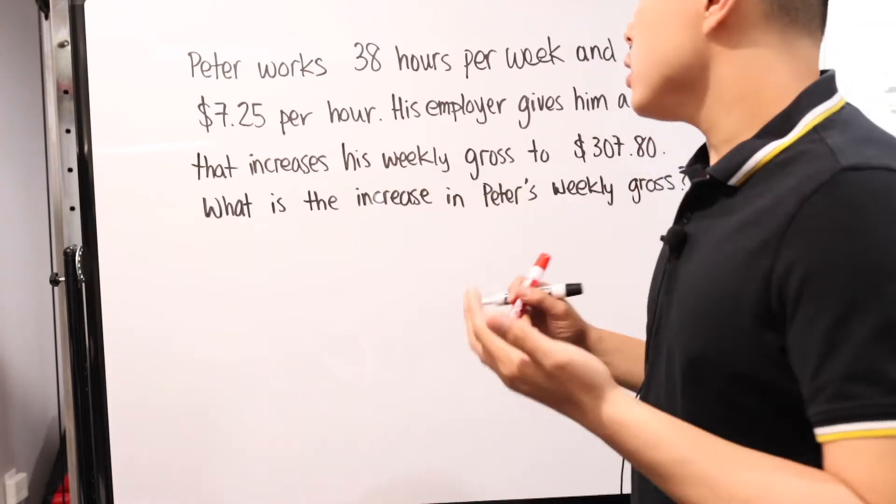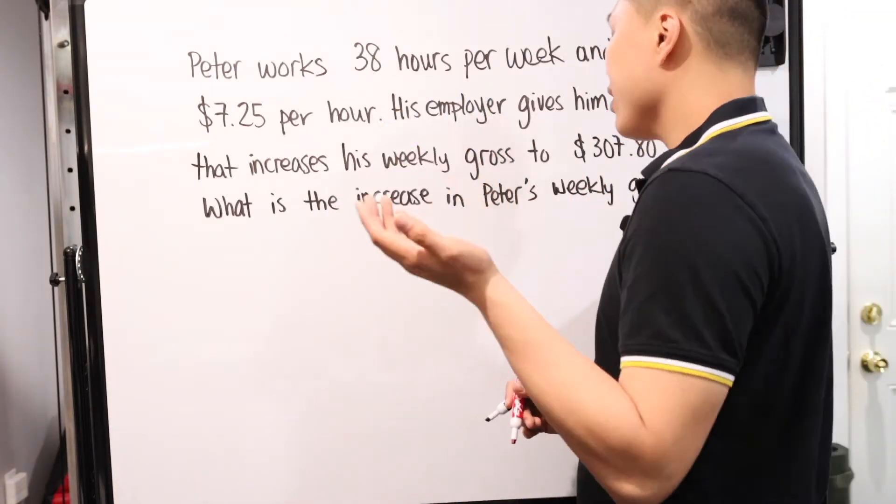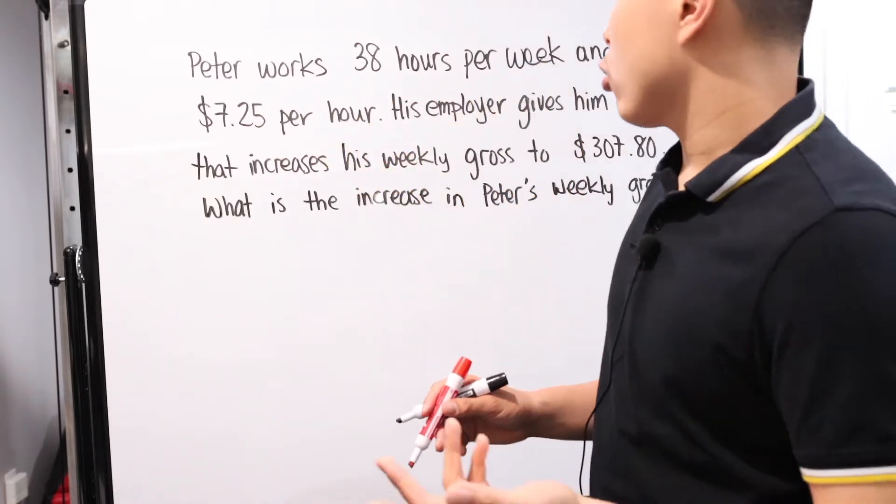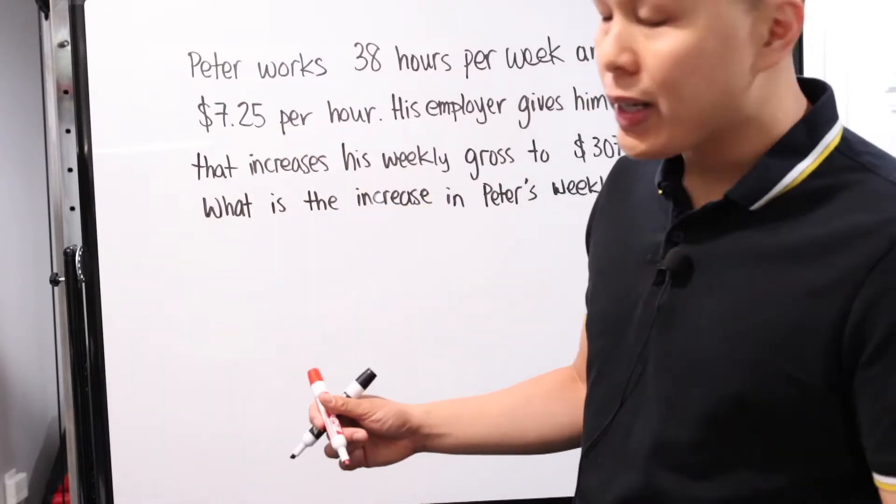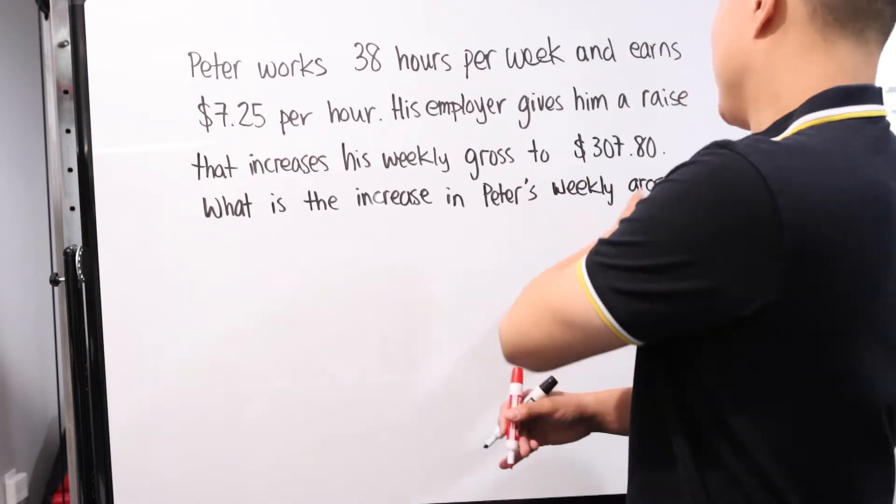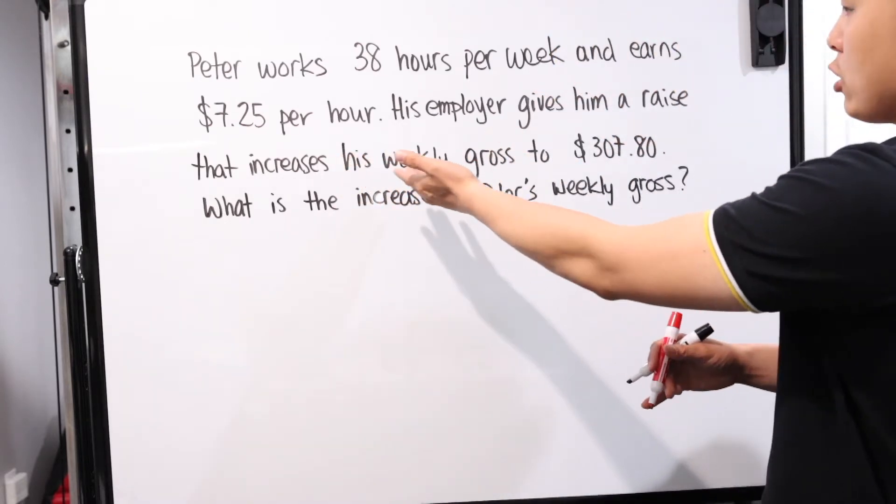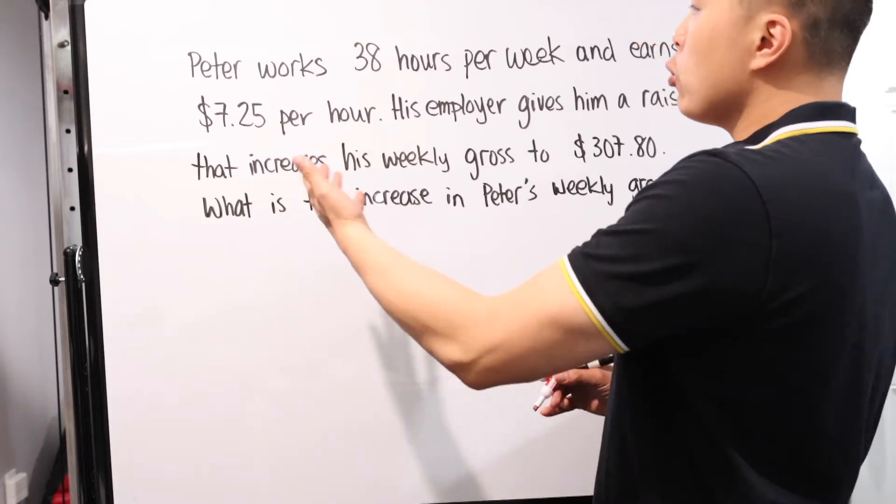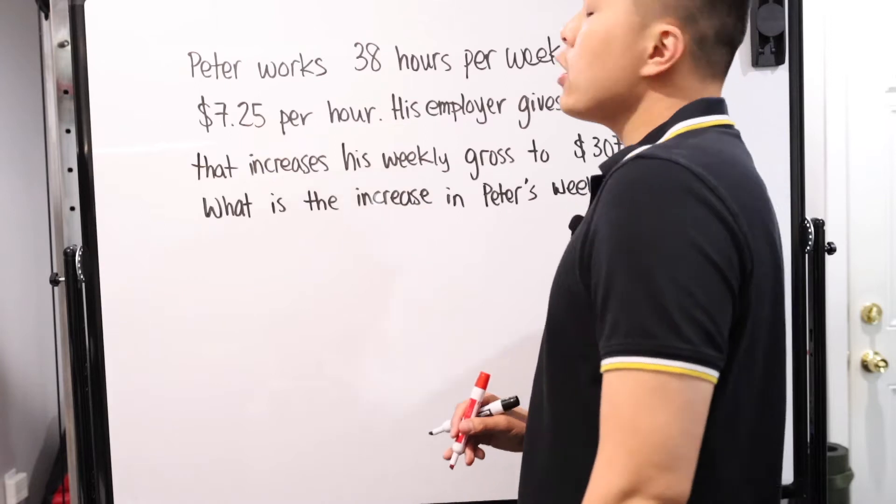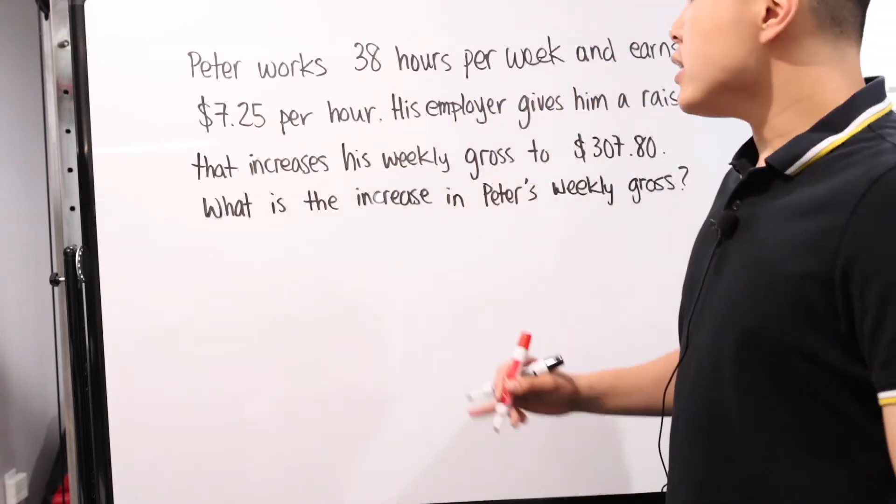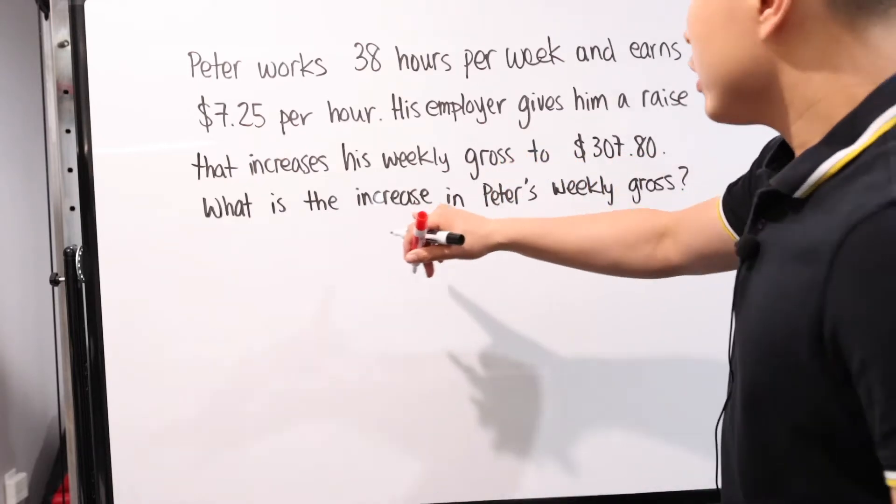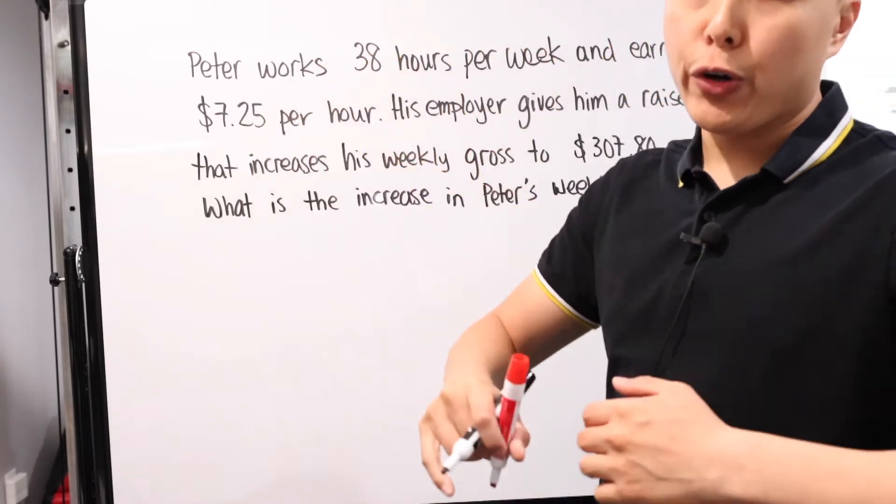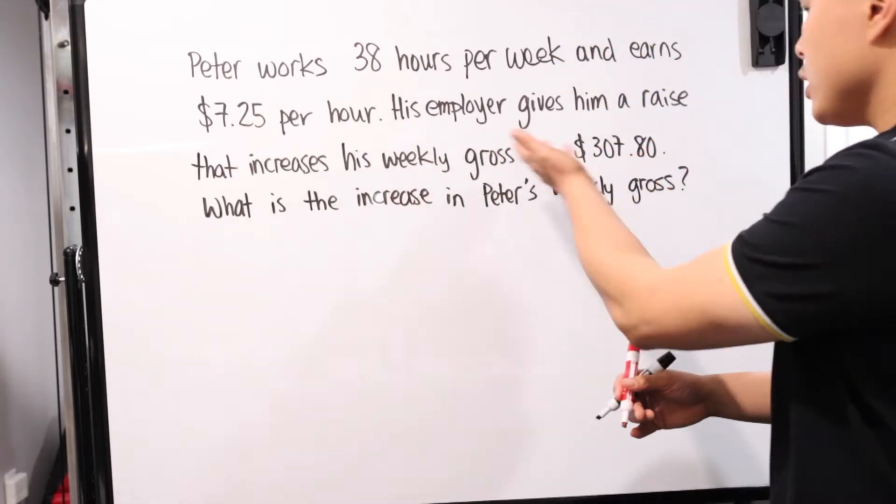Here's our next problem. This is a fairly simple word problem. The only thing is probably they just word it in a way that could be confusing if you're not used to more financial talk. They give you two different things that you are working with. One of them is just a pay per hour, and then they tell you how many hours this guy Peter works. And the other one is how much he earns in a week. Peter works 38 hours per week and earns a total of $7.25 per hour. His employer gives him a raise that increases his weekly gross to $307.80. What is the increase in Peter's weekly gross?